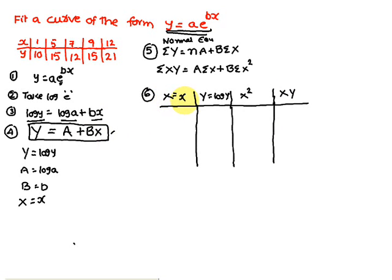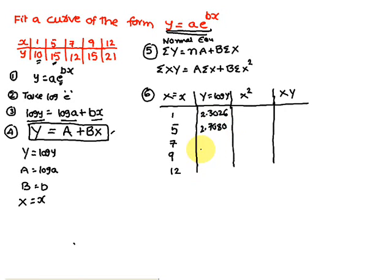The x values are 1, 5, 7, 9, and 12. For capital Y, you need log(small y) base e. Log(10) base e = 2.3026, log(15) base e = 2.7080, the next value is 2.4849, the next is 2.7080, and the last is 3.045. These are the capital Y values. For X²: 1, 25, 49, 81, and 144.